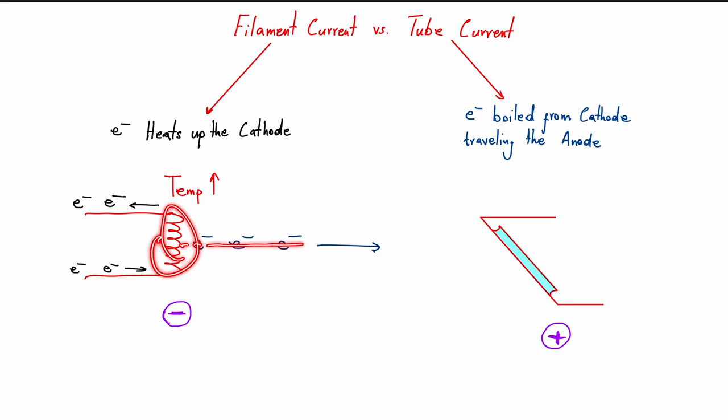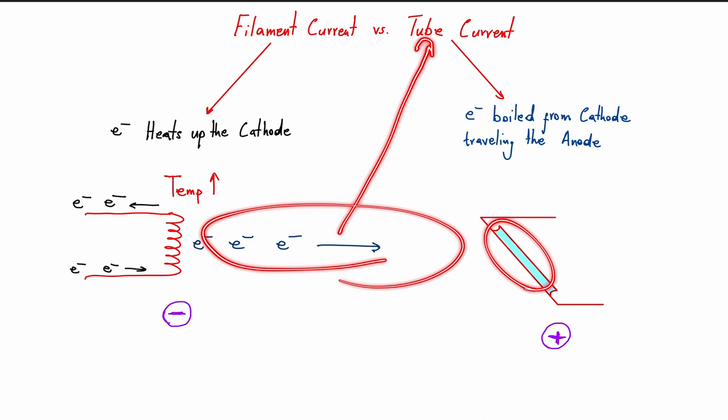Now, these electrons that are making this commute from the cathode to the anode, these are the ones we refer to as the tube current, and are responsible for producing x-rays under the influence of the KVP.